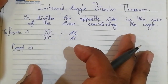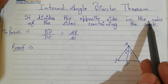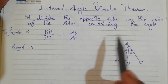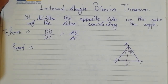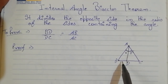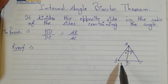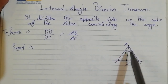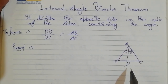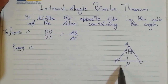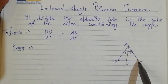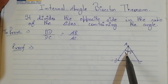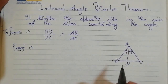The statement of this theorem says that it divides the opposite side in the ratio of the sides containing the angle. In this figure, AD is the internal bisector, so angle 1 equals angle 2. Then the opposite side BC is divided in the same proportion as AB and AC. We have to prove that BD upon DC equals AB upon AC, because these are the sides containing the angle.